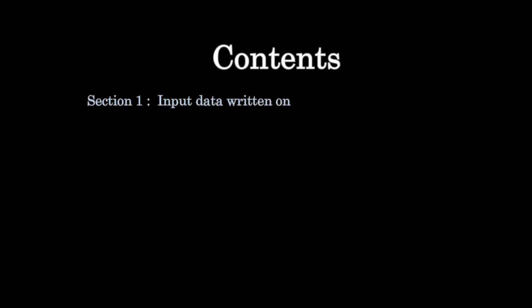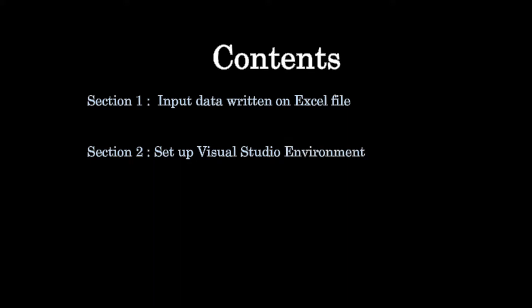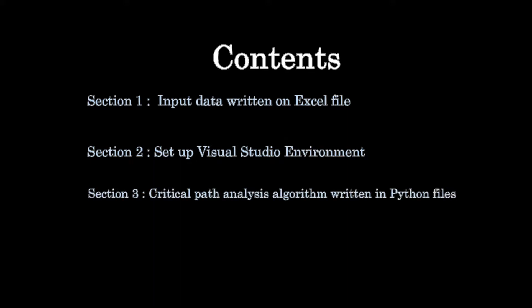The four sections covered in this video are: input data written on the Excel file, setting up the Visual Studio environment, the critical path analysis algorithm written in Python files cpa.py and cpa_function.py, and the Excel VBA code to run the Python file.